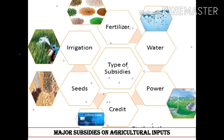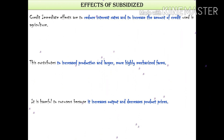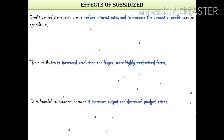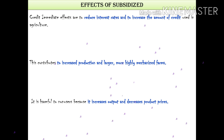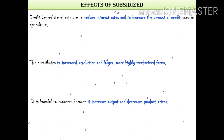The effects of subsidies: first, they reduce interest rates and increase the amount of credit used in agriculture. Second, they increase production and encourage larger, more highly mechanized farming. Third, they can be harmful to non-users because increased output decreases product prices.